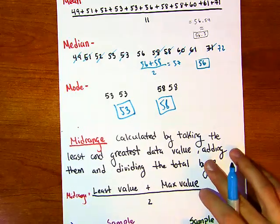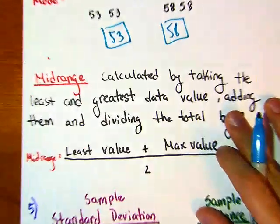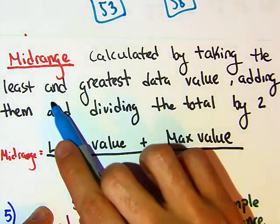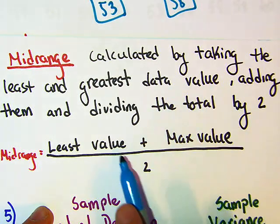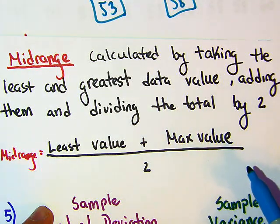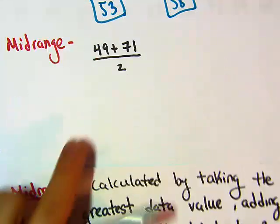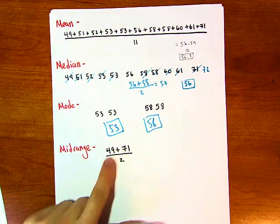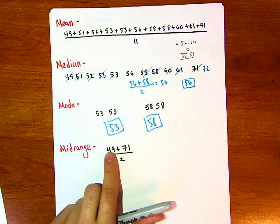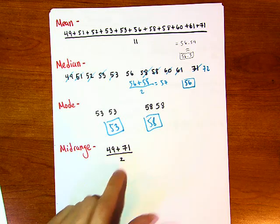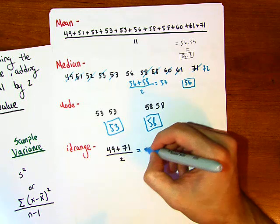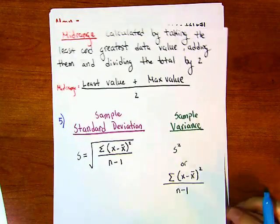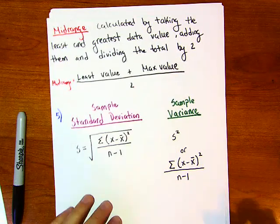To find the mid-range, take the least and greatest data values, add them, and divide by two. In our data, the least value is 49 and the greatest is 71. So 49 plus 71 equals 120, divided by 2 equals 60. The mid-range is 60.